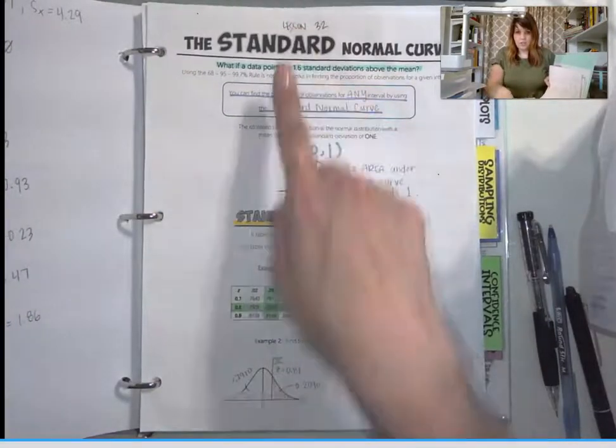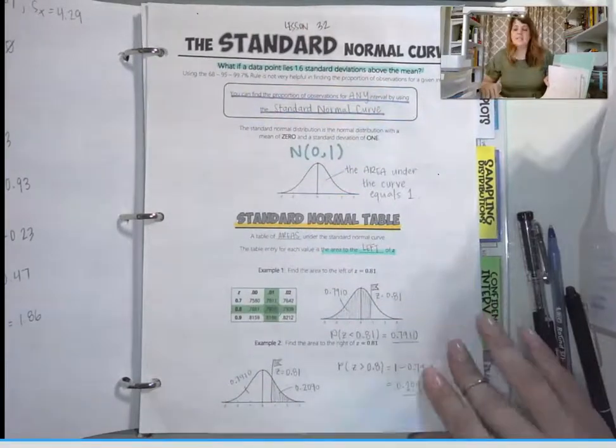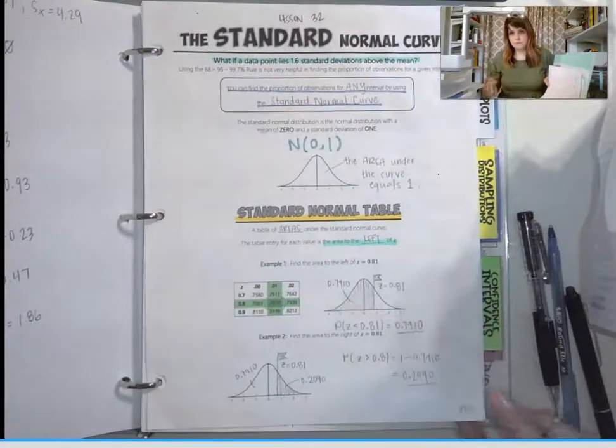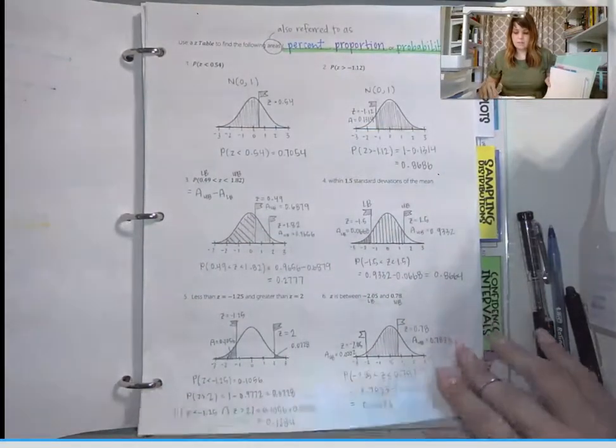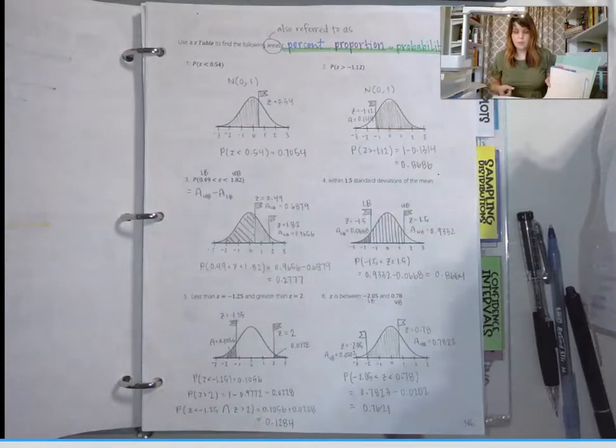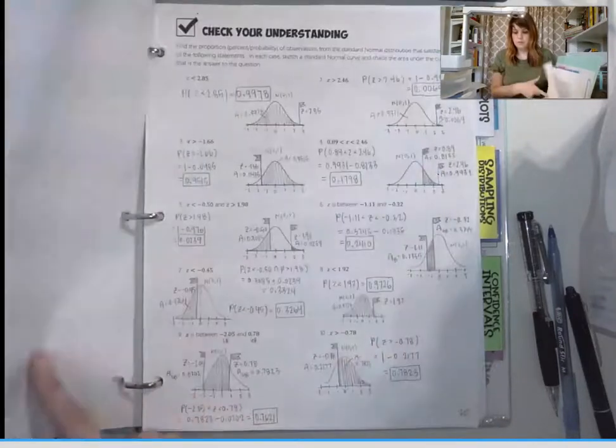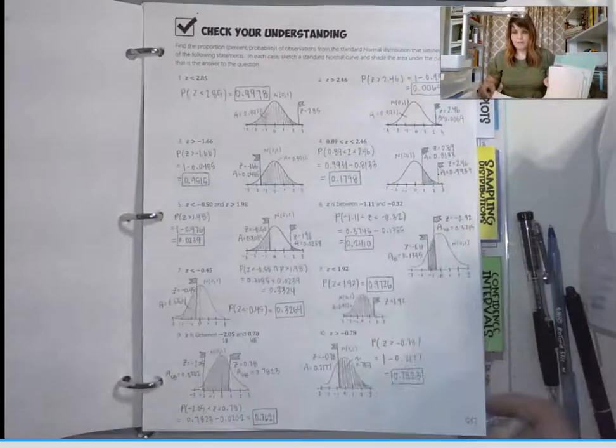Page 305 is lesson 32, the standard normal curve. Page 306 is six problems on the standard normal curve. Page 307 is a check for understanding.